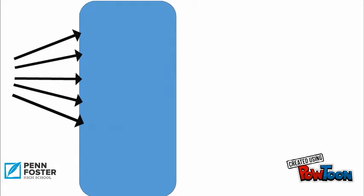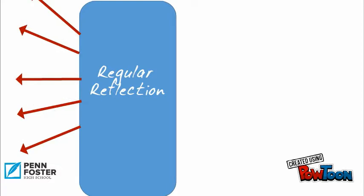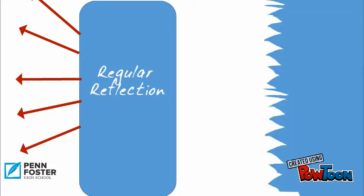Smooth surfaces, like glass, reflect waves back in a regular pattern. But the edges of rough surfaces are at different angles, creating different angles of reflection.